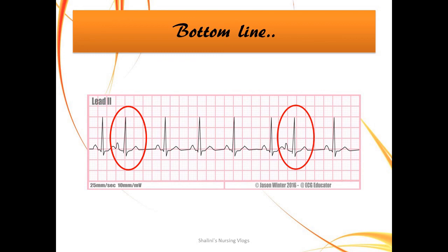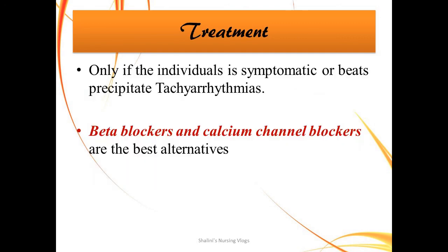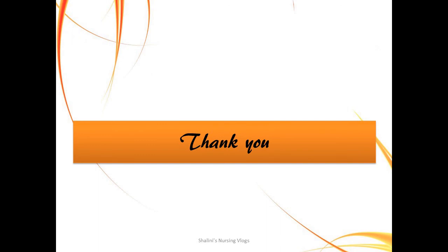The take-home message: premature atrial complexes occur earlier than expected. When you see a morphological change in the P wave, think of an atrial issue. When there is a morphological change in the QRS complex, think of a ventricular problem. Not everybody with a premature atrial complex needs treatment, but symptomatic individuals who may precipitate tachyarrhythmias do need treatment — in such cases, beta blockers and calcium channel blockers are the best alternatives. I hope you liked today's video — kindly let me know your topic of interest, doubts, and comments. Thank you and have a great day.